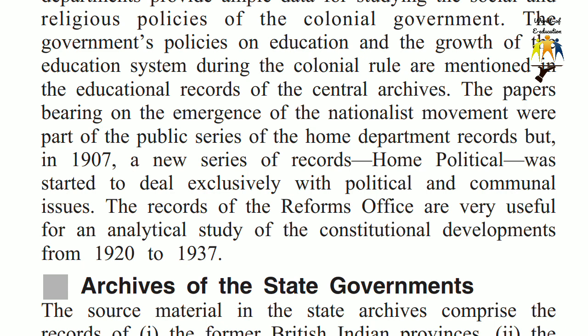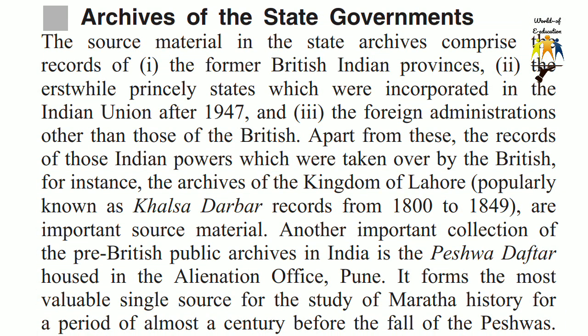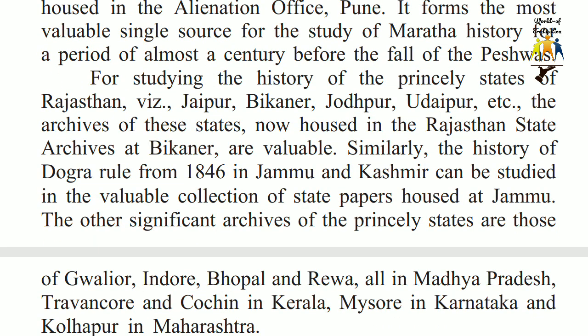Archives of the State Governments. The source material in the State Archives comprises the records of: 1. the former British Indian Provinces, 2. the erstwhile princely states which were incorporated in the Indian Union after 1947, and 3. the foreign administrations other than those of the British. Apart from these, the records of those Indian powers which were taken over by the British — for instance, the archives of the Kingdom of Lahore, popularly known as Khalsa Dhabha records from 1800 to 1849 — are important source material. Another important collection of pre-British public archives in India is the Peshwa Duftar, housed in the Alienation Office, Pune. It forms the most valuable single source for the study of Maratha history for a period of almost a century before the fall of the Peshwas.